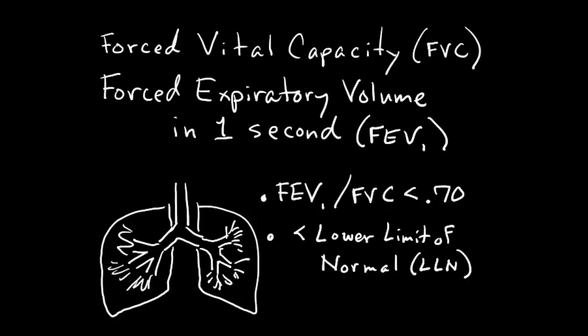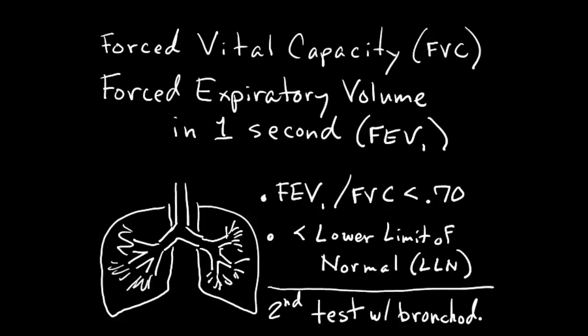These criteria could also indicate asthma. To distinguish between COPD and asthma, people meeting either criterion had a second test after inhaling a bronchodilator. A bronchodilator opens the airways if you have asthma, but not if you have COPD. Someone who still meets the criteria after the bronchodilator is considered to have COPD; if their airways open, they're considered to have asthma.